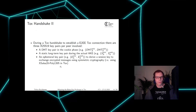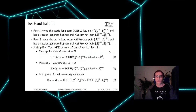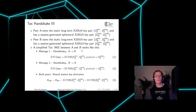Symmetric cryptography in TOX is established using XSalsa20-Poly1305. Both peers need a static long-term key pair that identifies them and an ephemeral key pair to establish the session secret. Alice, as initiator, sends a handshake message to Bob. This message is encrypted using a shared secret based on Alice's static private key and Bob's static public key, which is used to encrypt Alice's ephemeral public key for this session.